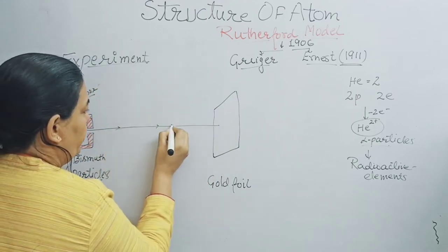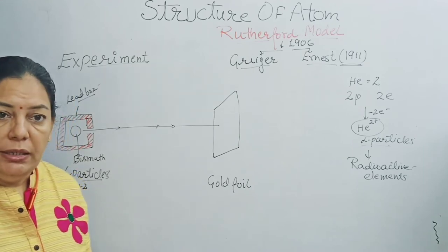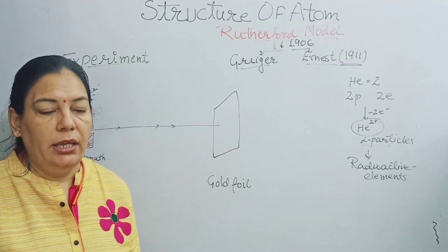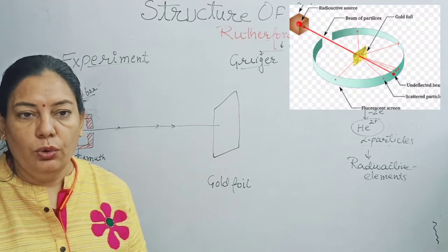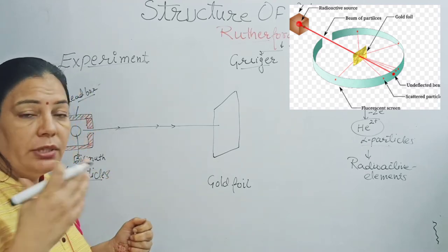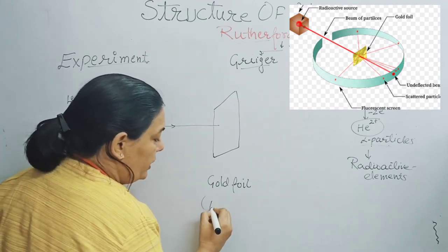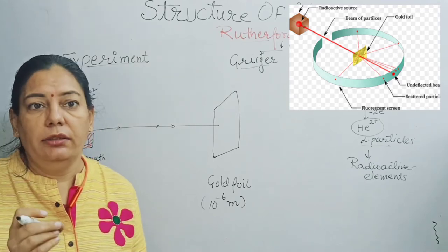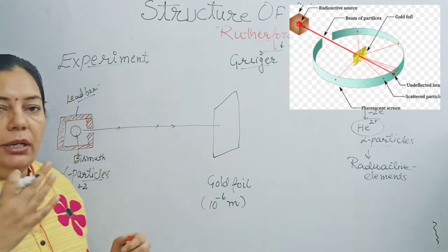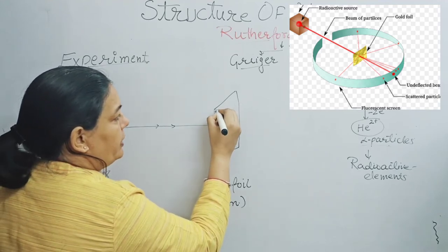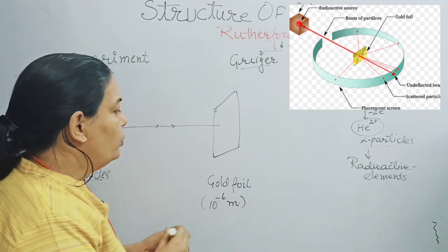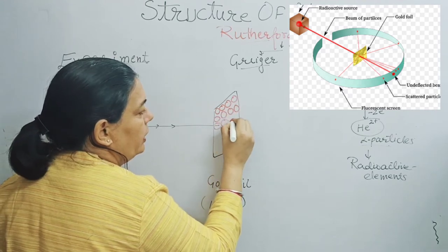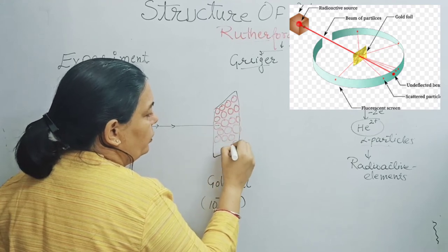Why did Rutherford select gold foil rather than silver, platinum, copper, or aluminum? Because gold is the most malleable metal. The thickness of the gold foil was 10⁻⁶ meters — so thin that we can assume the gold foil is made up of only a single layer of gold atoms. That is why gold foil was selected.